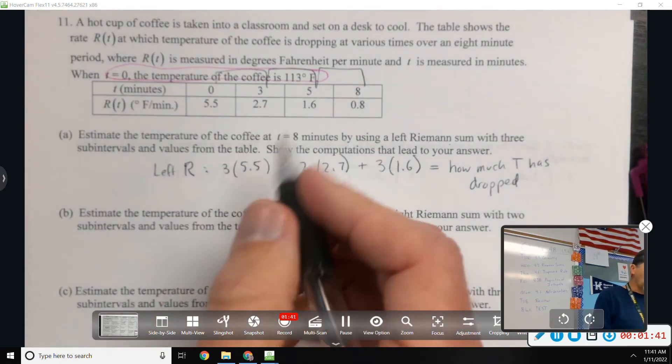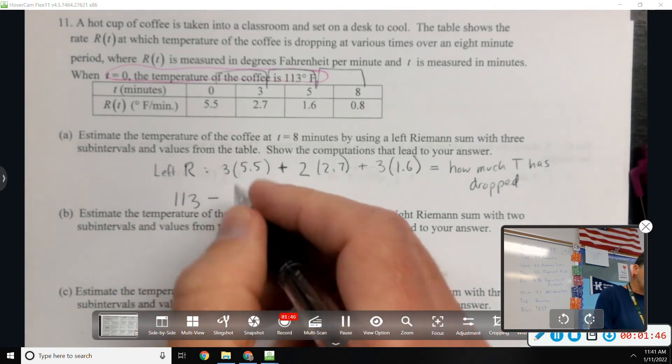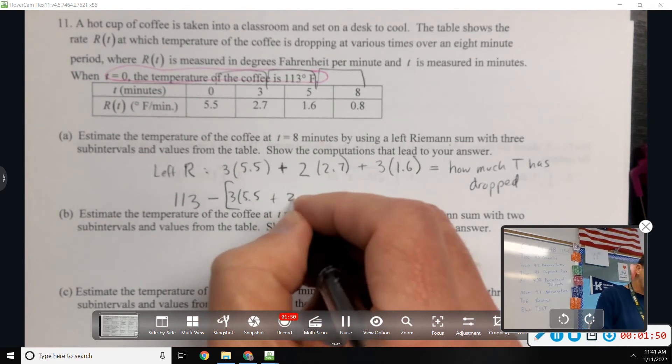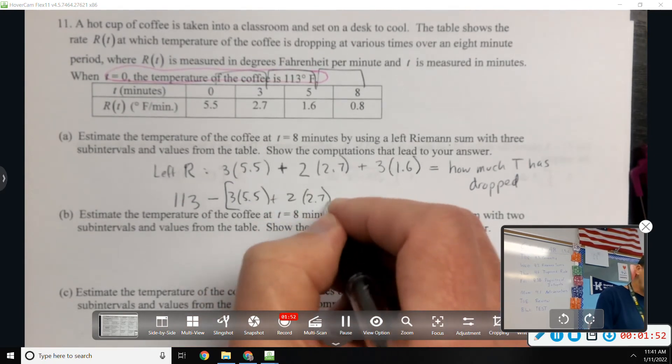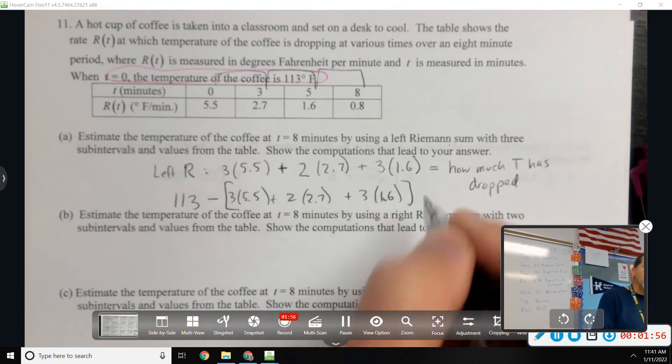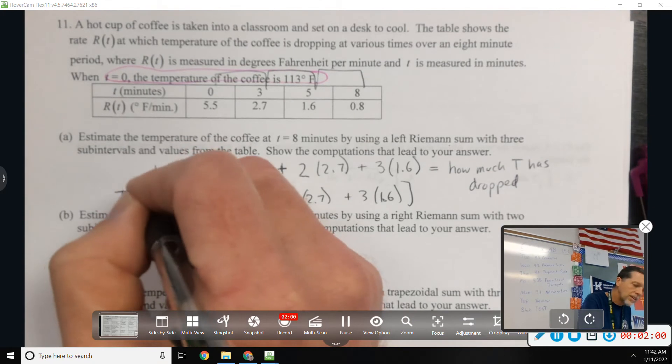Yeah, so be careful how you word it. If all of this you're saying is positive, then you would do 113 minus all of that. But if you wanted to make all of that negative because it's dropping, then it'd be 113 plus all of that. So the temperature at 8 is approximately.